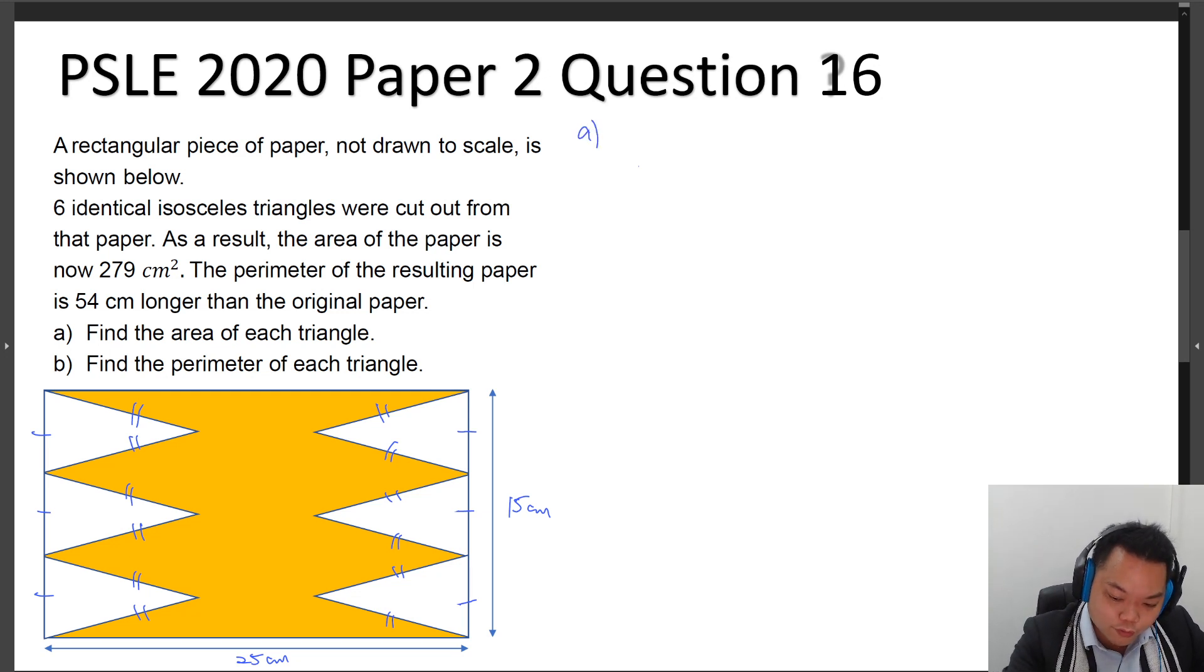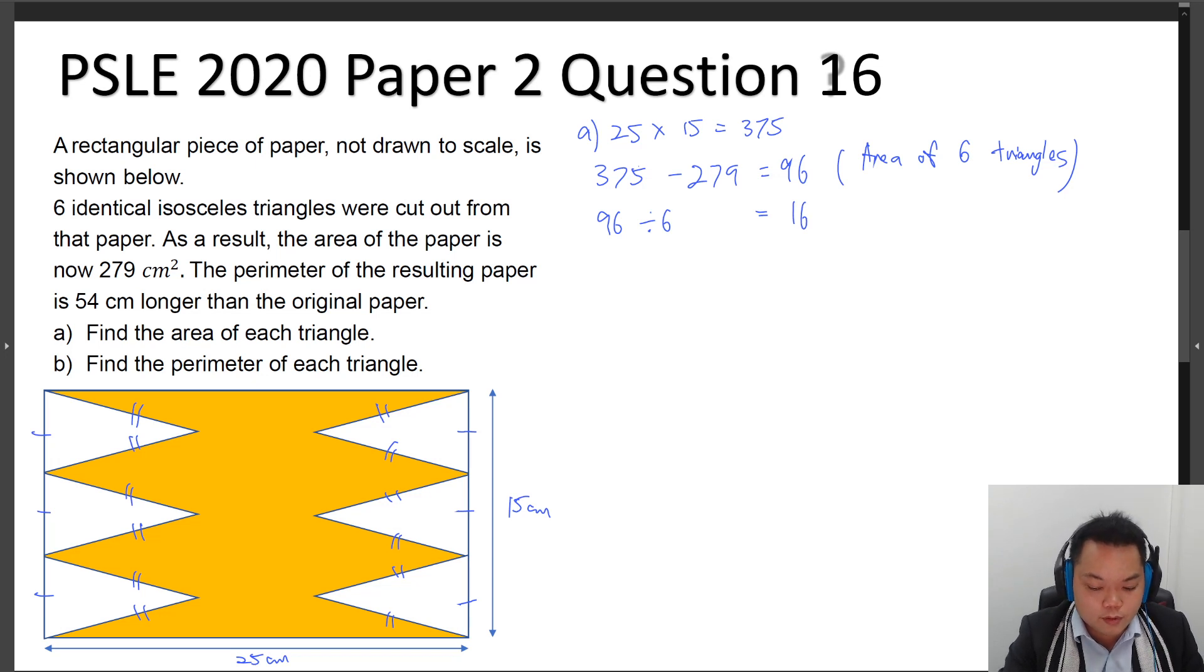To deal with the first part, it's rather straightforward. We find the area of the rectangular piece of paper first. This would just be 25 times 15 to give you 375, then 375 cm squared. When we subtract off the remaining area, we would get 96, which represents the area of six triangles. And since all of them are identical, we can just take 96 and divide this by 6 to give you 16. So part A is settled, 16 cm squared.